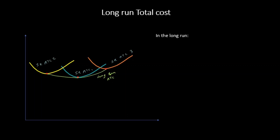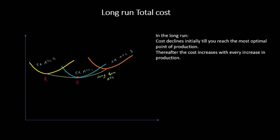So what happens in the long run? Initially the cost declines until you reach the most optimal point of production. Say for example I name this point as A and this as B. So from A to B my cost declines, and then if I further increase my production, my cost increases — so from B to C the long-run average total costs are increasing.